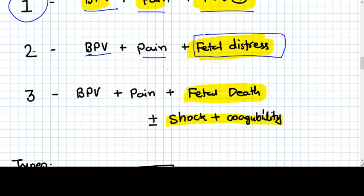The category three is bleeding PV, pain in abdomen. Here the fetal death is there. Intrauterine death already happened there. So the abruptio placenta is one of the leading causes of intrauterine death also. It can be shock also present with this thing. Coagulation disorder can be there. Anything can be there in stage three or category three.